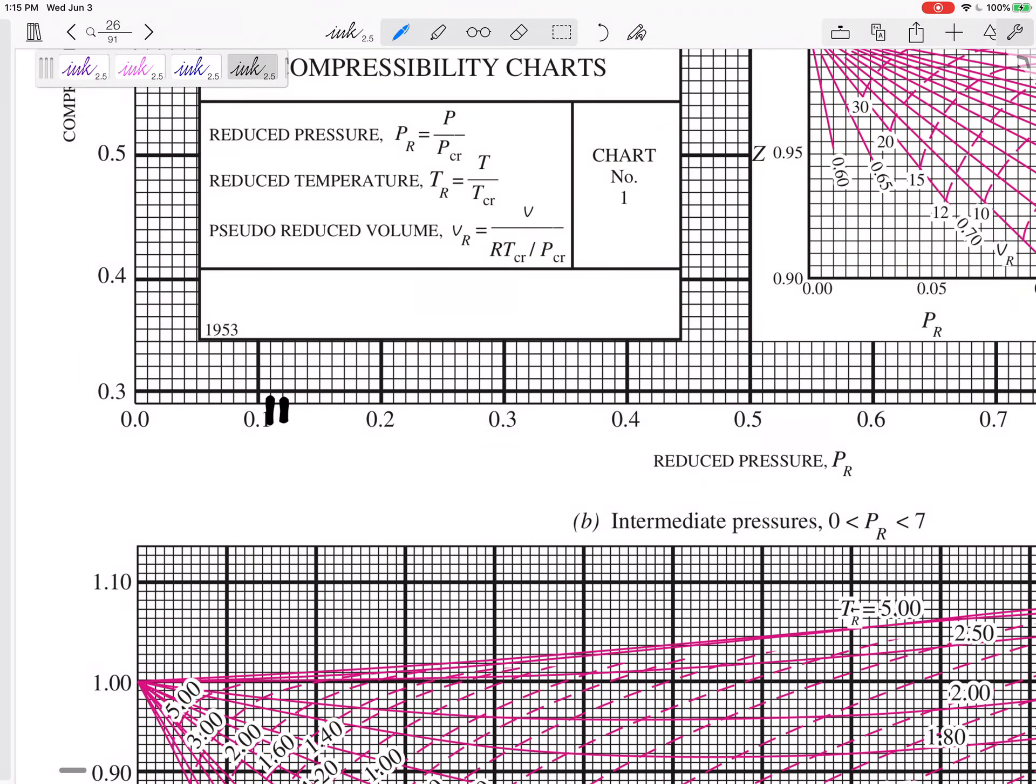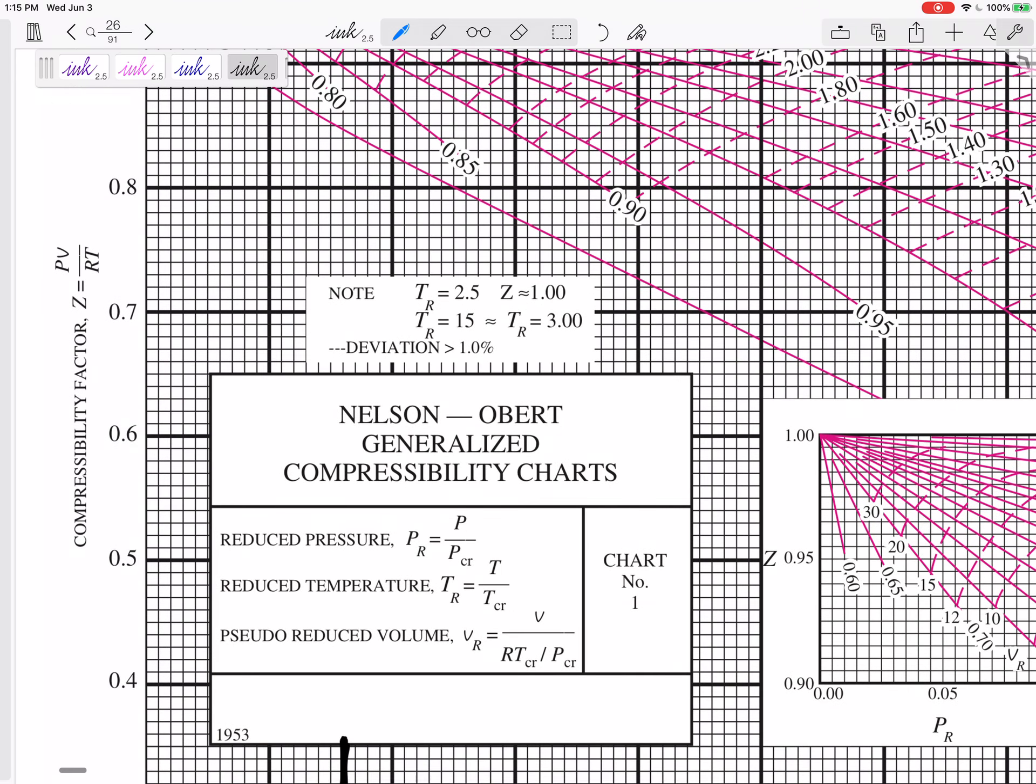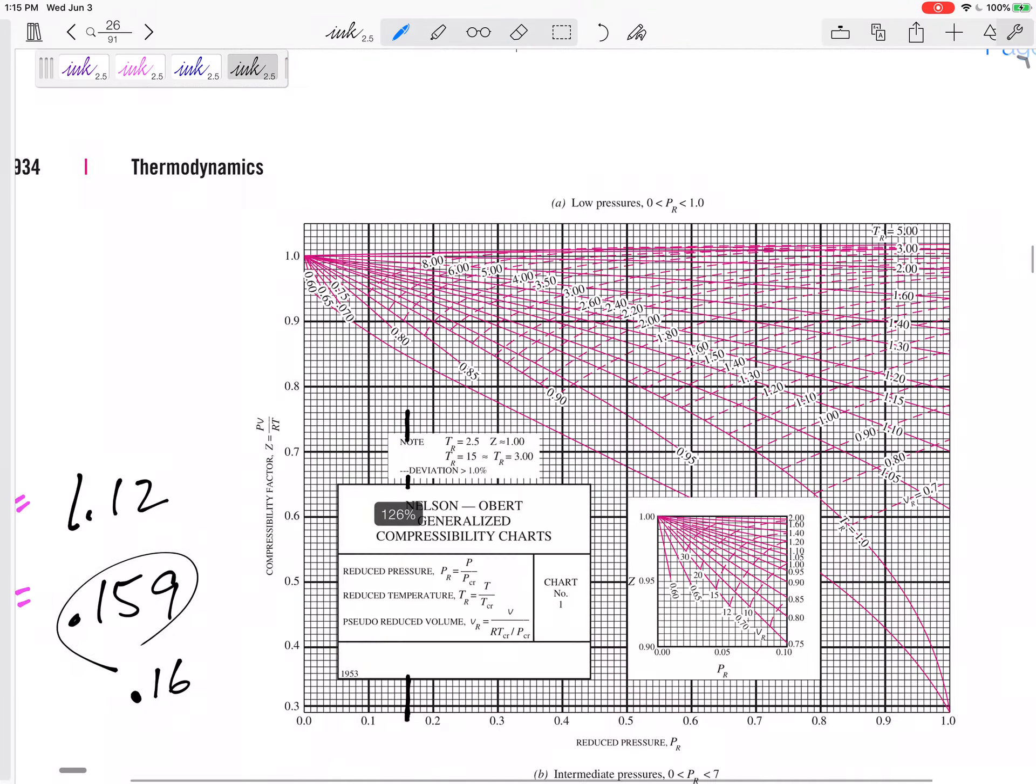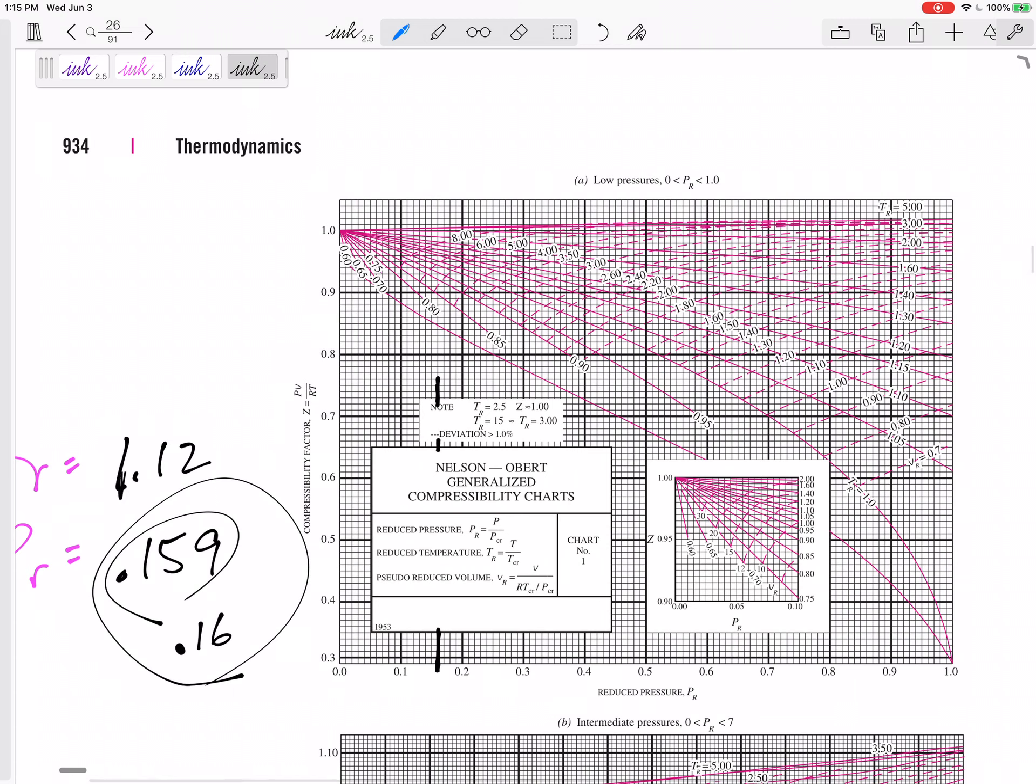So here's 1, 2, 3, 4, 5, 6. So right there, that last one is 0.16. So I'm going to follow that line right there. Let me follow 6, 7, 6. So that line is what we're looking for. That's the PR of 0.159, right? Close to 0.159.